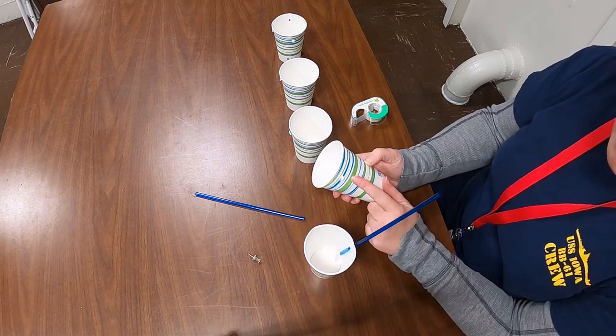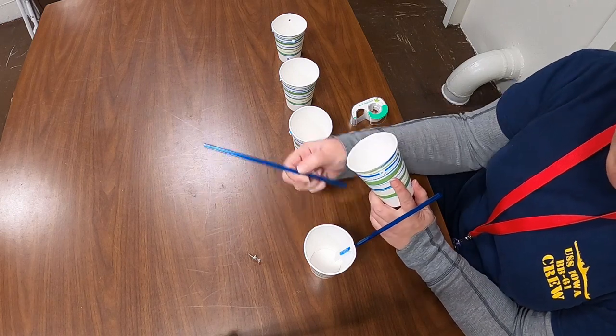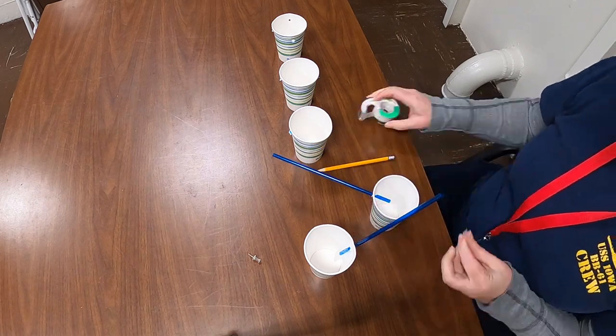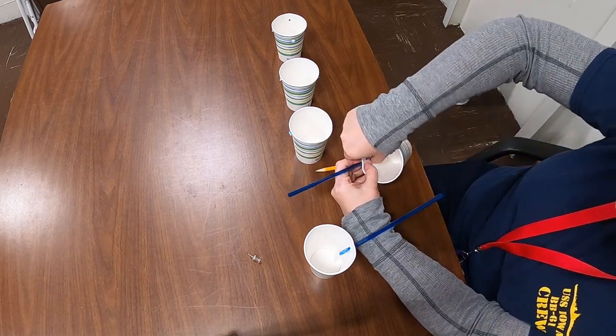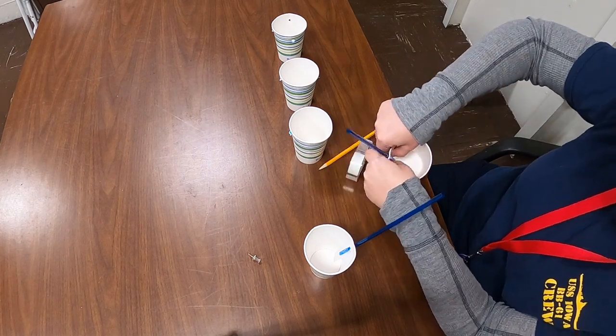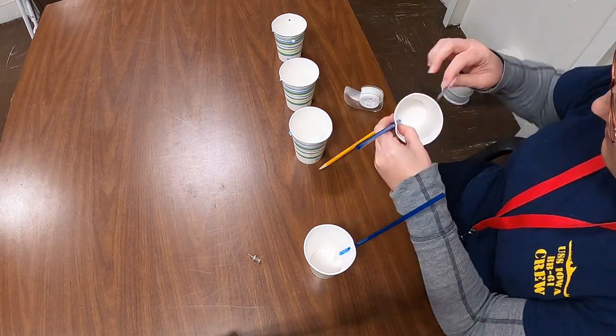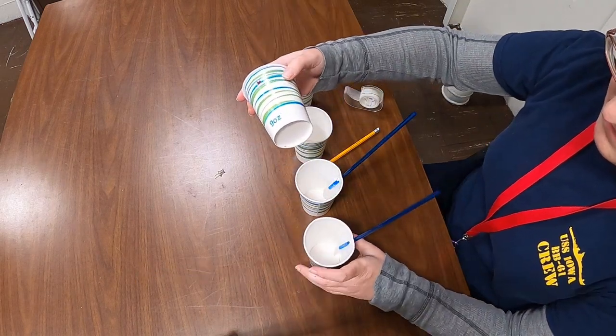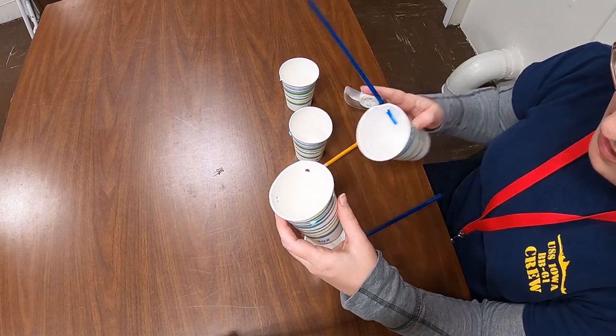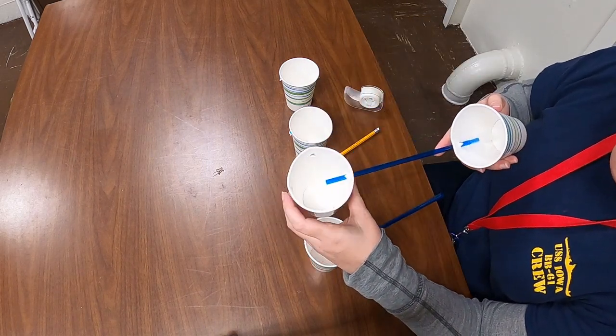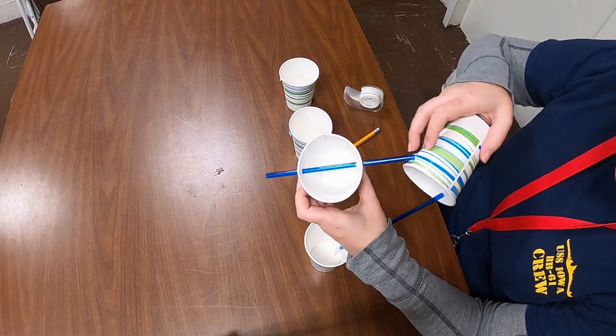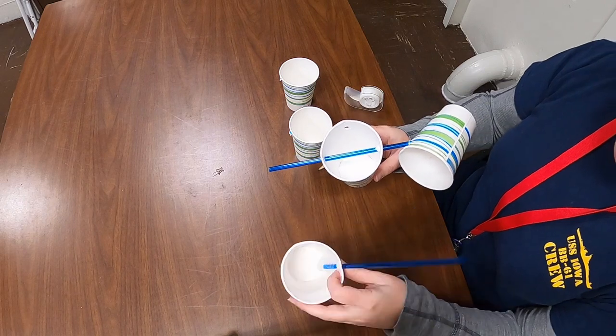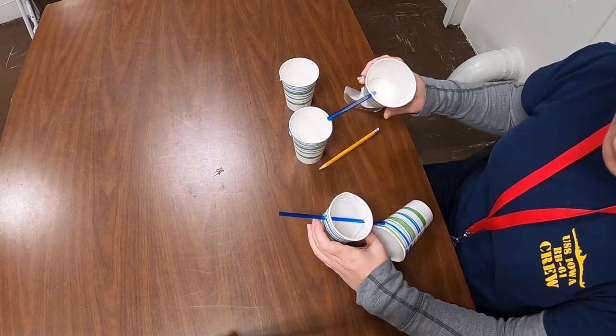Next we're going to take a second cup that also only has one hole in it and do the same thing with our second straw. Then we're going to take our cup that had four holes in it and we're going to thread our straw through a couple of those holes. And then we're going to take our next one and do the same through the other holes.